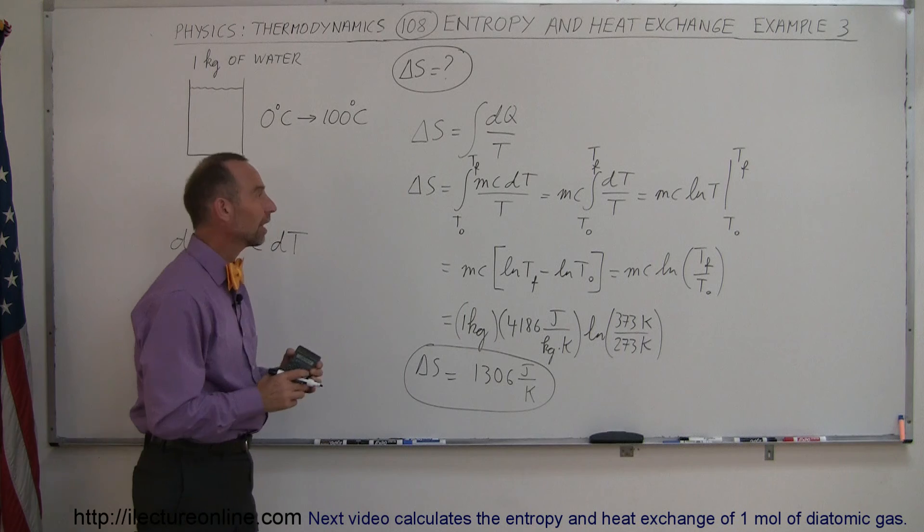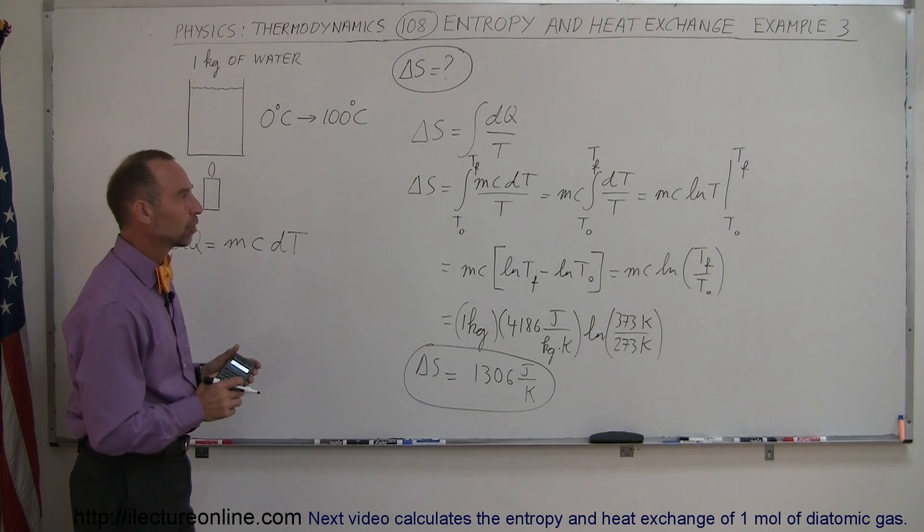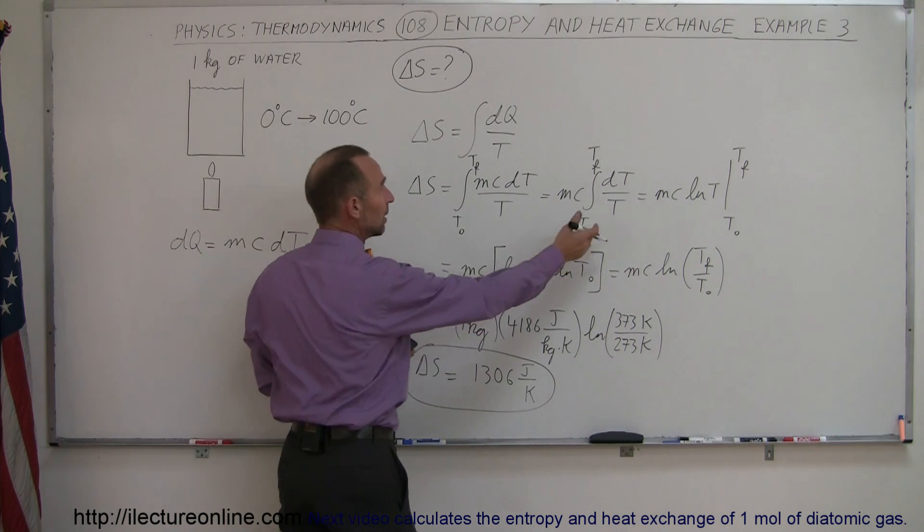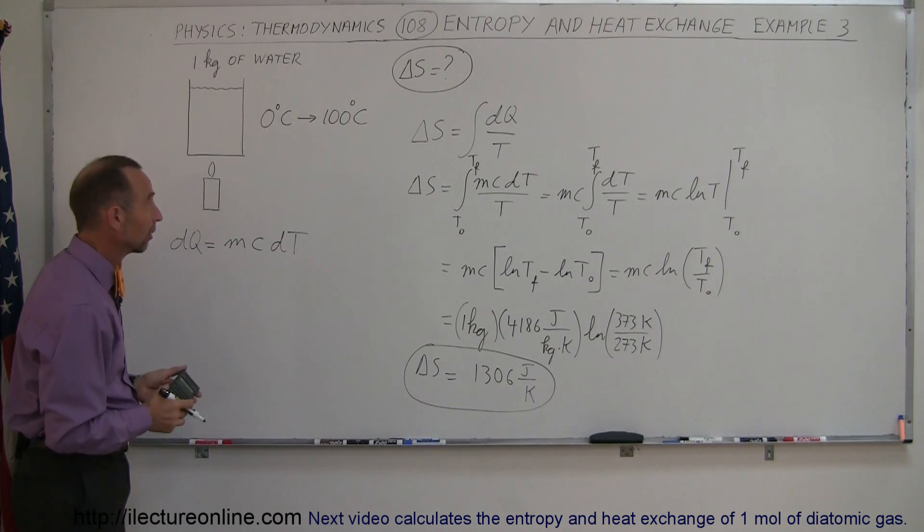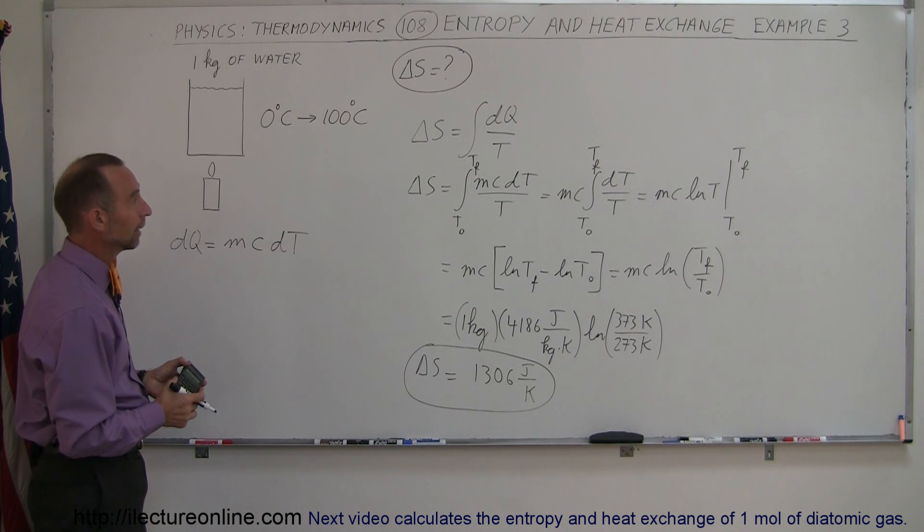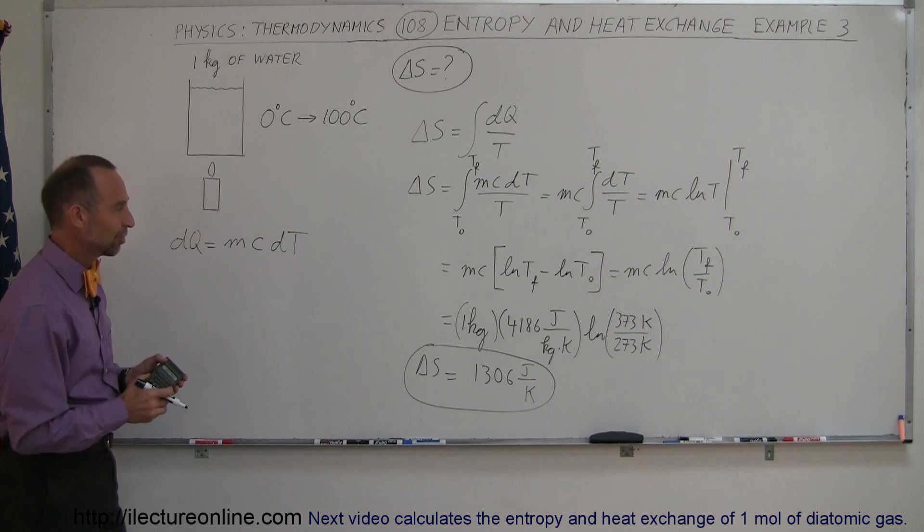So notice that it's not that difficult when we use this equation. Just remember that the integral of dT over T is the natural log of T, and then just plug in your limits and there's your answer. Very straightforward, and we'll see if we can come up with another example of how to calculate the entropy change.